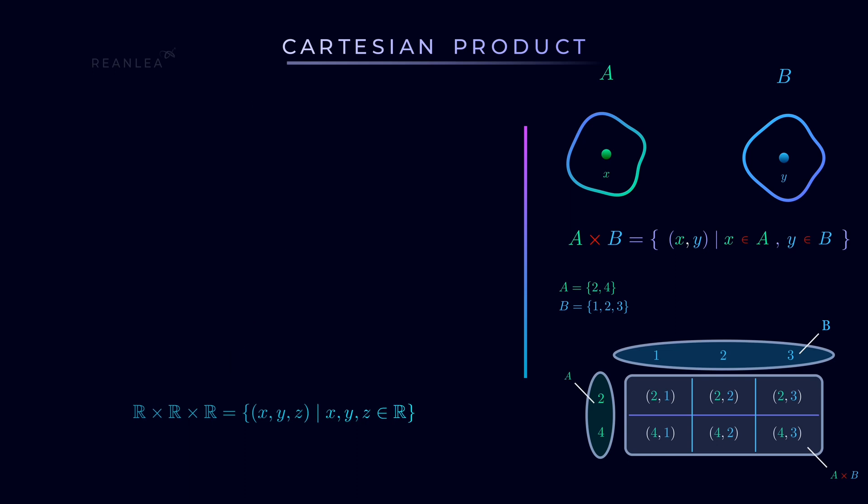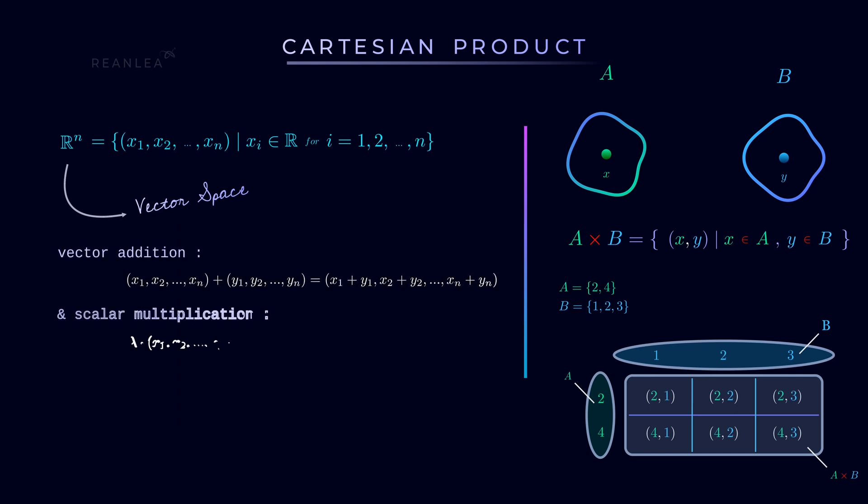Further generalizing the Cartesian product of R by n times, we get it as a collection of ordered n-tuples (X₁, X₂, ..., Xₙ) as its elements, where X₁, X₂, ..., Xₙ are from R, and we simply represent it as Rⁿ. And interestingly, Rⁿ is a vector space with respect to component-wise vector addition and scalar multiplication defined as (X₁, X₂, ..., Xₙ) + (Y₁, Y₂, ..., Yₙ) = (X₁ + Y₁, X₂ + Y₂, ..., Xₙ + Yₙ), and λ · (X₁, X₂, ..., Xₙ) = (λX₁, λX₂, ..., λXₙ), where (X₁, X₂, ..., Xₙ) and (Y₁, Y₂, ..., Yₙ) are in Rⁿ.